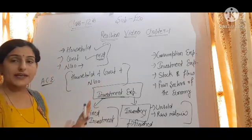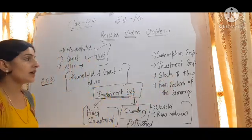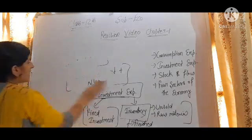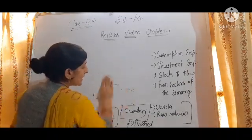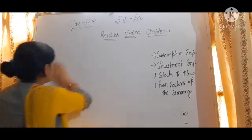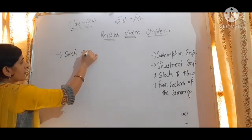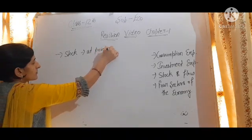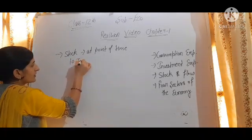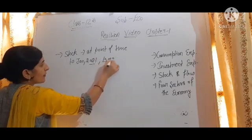We have discussed consumption expenditure and investment expenditure. Now we have the stock and flow concept. Stock is mainly measured at a point of time, while flow is measured over a specific period of time. For example, on 10th January 2021, there is 10,000 rupees in your bank account — that is the stock concept.